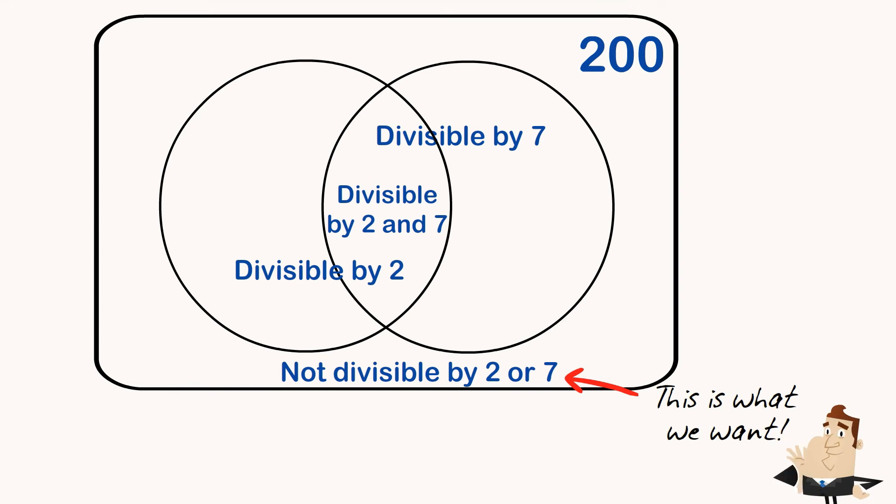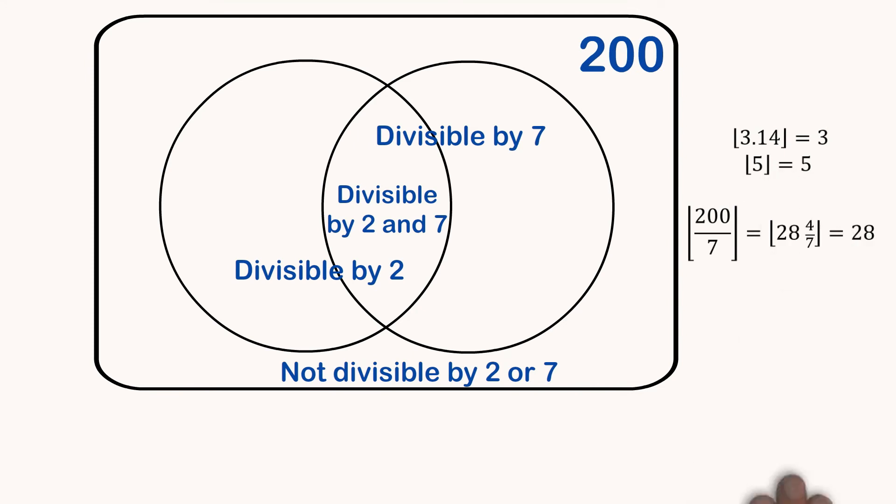So to do this one, we're going to use the floor function. So the floor function is just these two funny brackets, and all this means is just whatever's in the brackets gets pushed down to the next integer value. So the floor of 3.14 is 3.